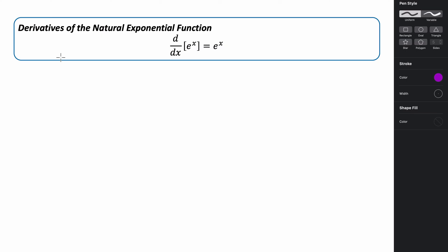The last rule we're going to look at is the derivative of the natural exponential function. If you have e to the x and take its derivative, it's just e to the x. This is probably one of the easiest derivatives you'll ever do, because the derivative of this function is just the function itself. Let's try applying some of these derivative rules.